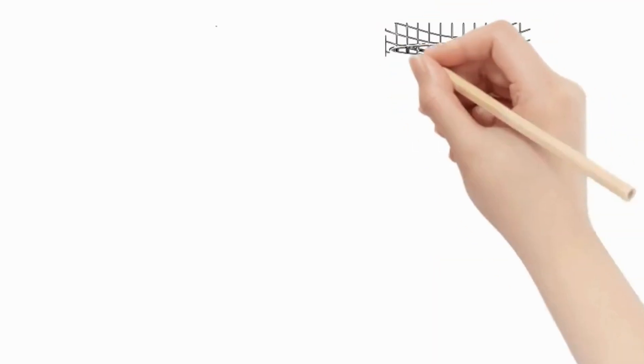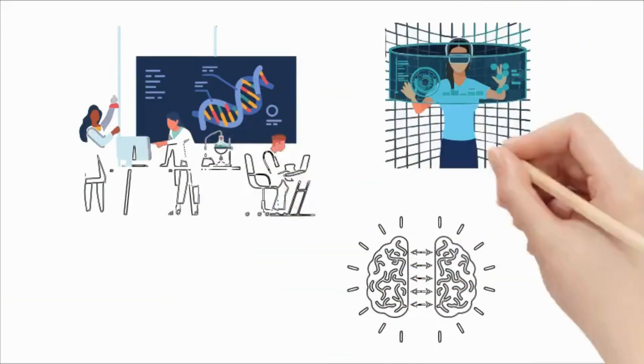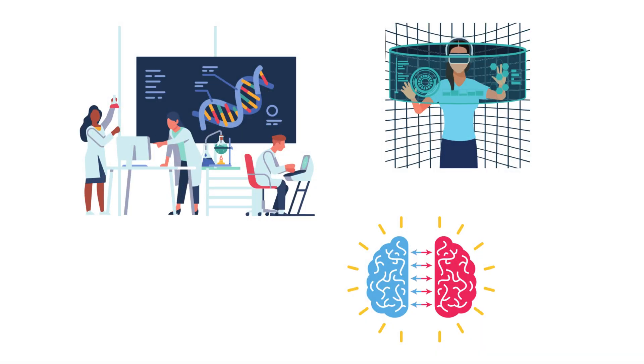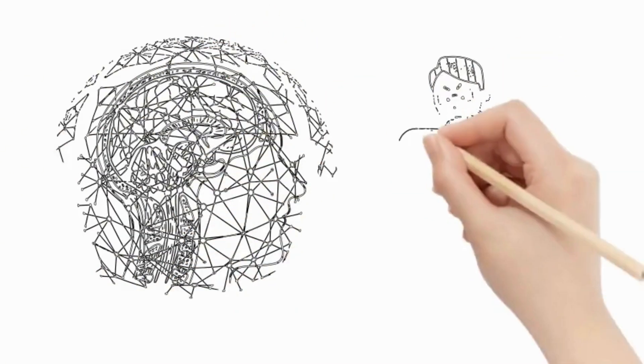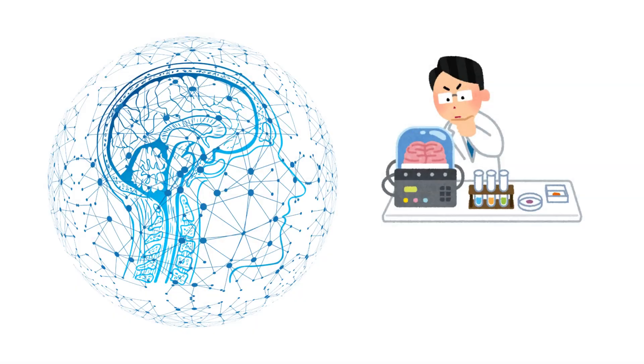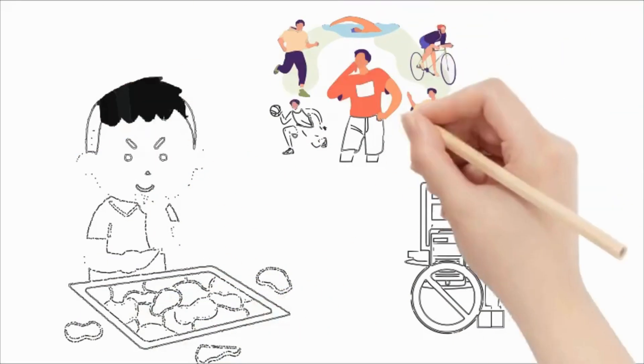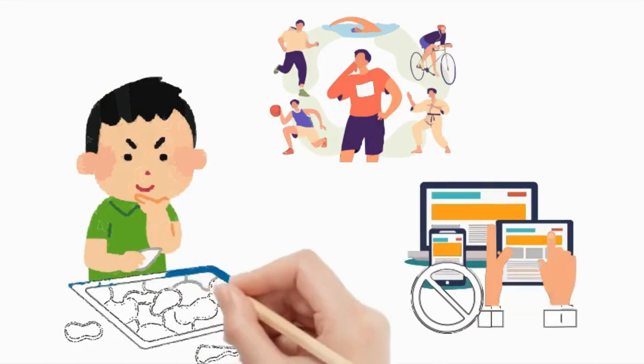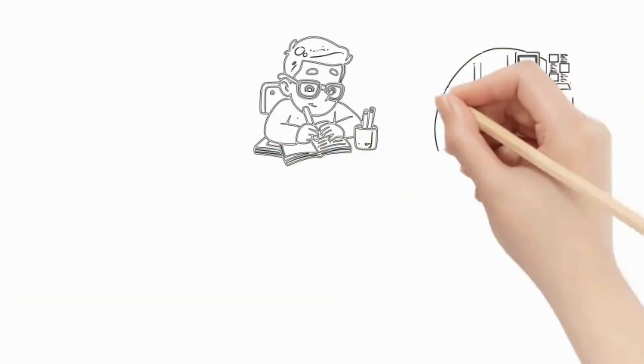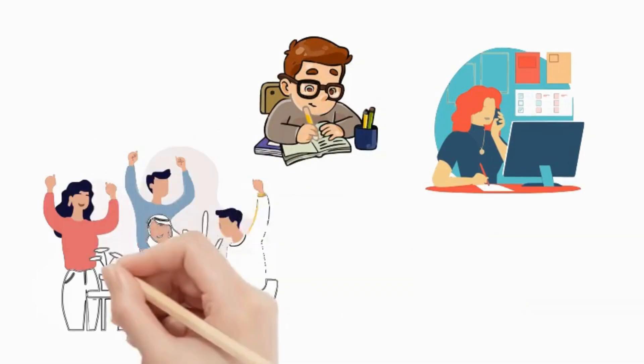Numerous scientific studies have shown that modern technology can alter the structure and functioning of the brain. While the changes in brain structure may be subtle, failing to address memory improvement could have significant repercussions for future generations. It's essential for everyone to allocate some time each day for active thinking without relying on technological devices. Specifically, use smart devices only for necessary tasks such as work or study support.